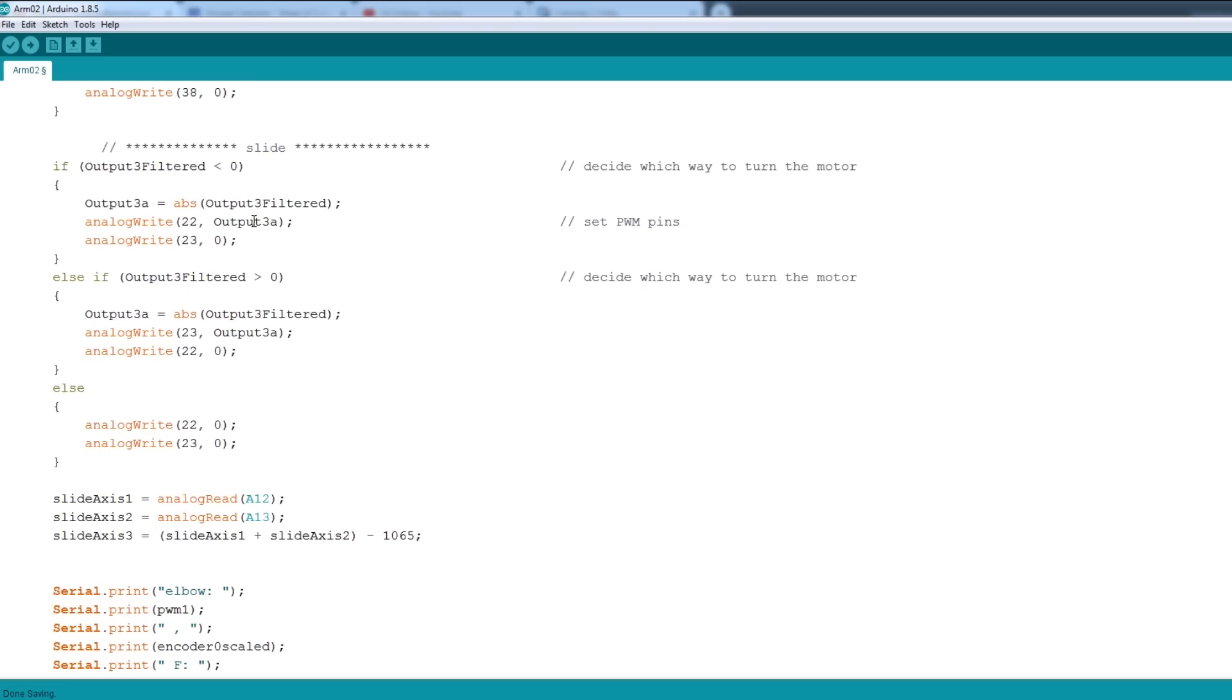Further down we're using that value to drive the two motor PWM pins, basically depending on whether the value is below zero or a positive value, so that drives the motor in each direction. If it's zero then it should turn the motor off altogether.